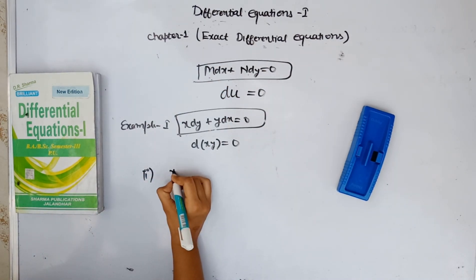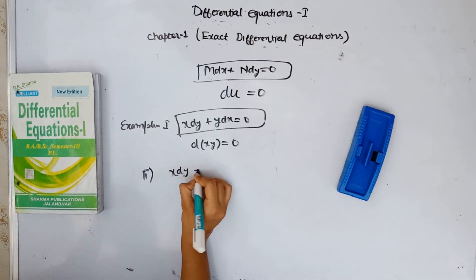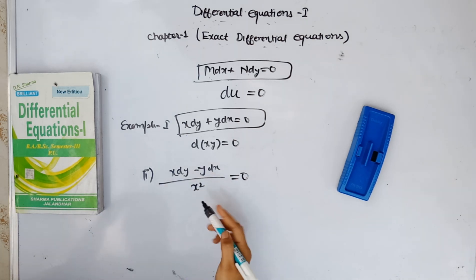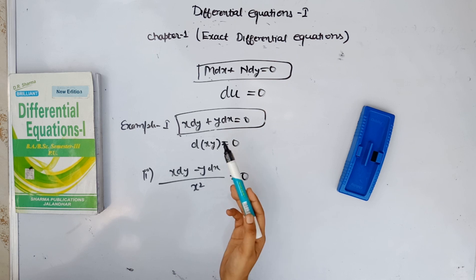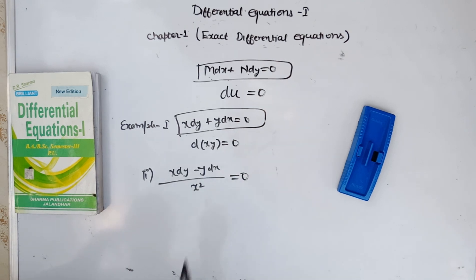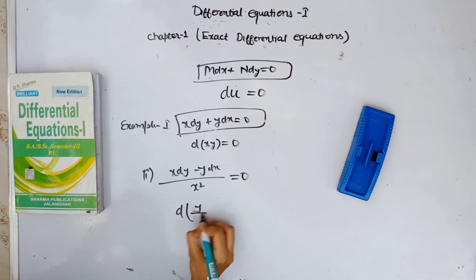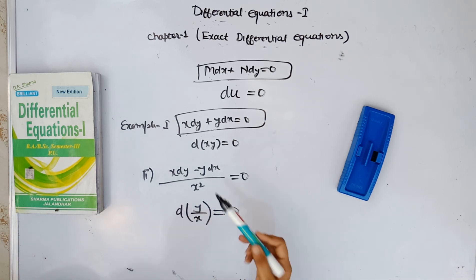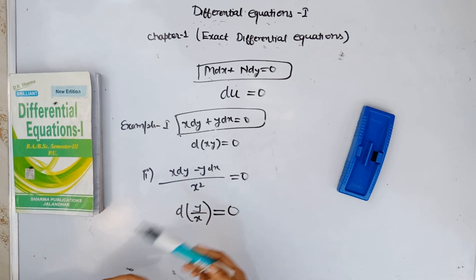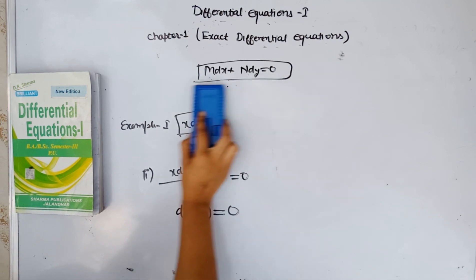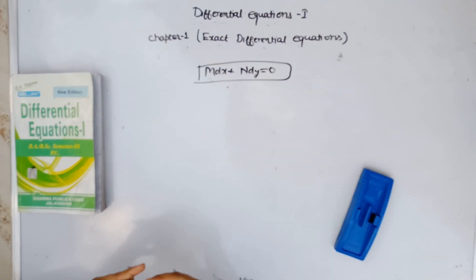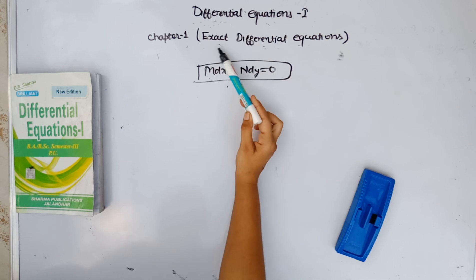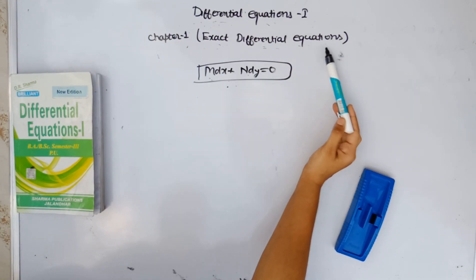Second example: x dy minus y dx is equal to 0. This is a differential equation. This equation is the derivative of y over x. Sometimes it happens that we don't know whether a given equation is an exact differential equation or not.